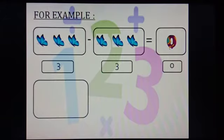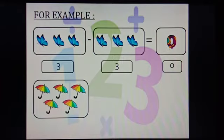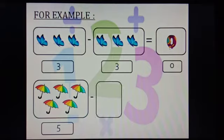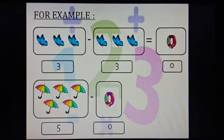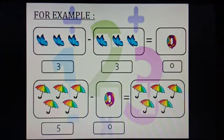Let us do one more example. There are some umbrellas. Let us count them. 1, 2, 3, 4 and 5. There are 5 umbrellas. We will subtract some of the umbrellas. Yes, there is no umbrella — there is 0. So, 5 minus 0: when we subtract 0, there are 5 umbrellas left. So, 5 minus 0 equals to 5.